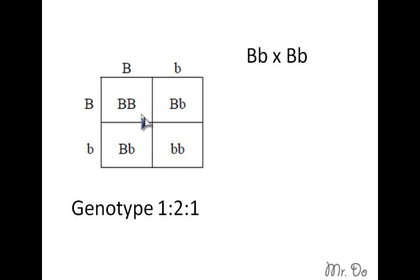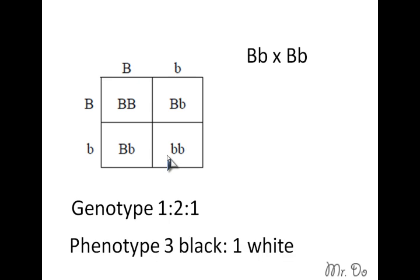You get what is called a genotype of one to two to one ratio. You have one homozygous dominant, two heterozygous, and one homozygous recessive. So if you have a black versus white animal and both animals are heterozygous, you'll get one that is black, two more that are black, and only one that's white. So chance of getting white is one out of four, chance of getting black is three out of four. The phenotype is 75% black or three out of four, and for white is one out of four.